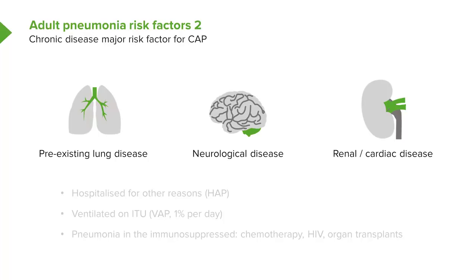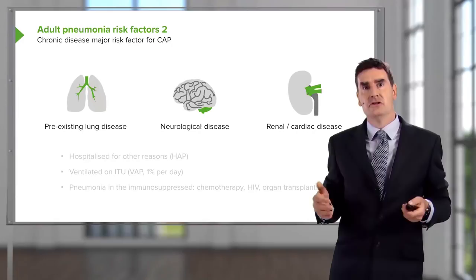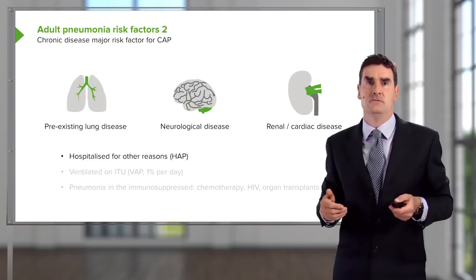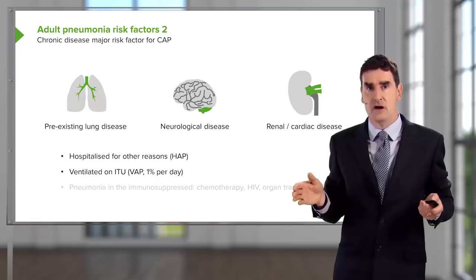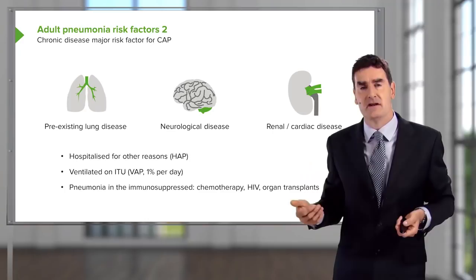For hospital-acquired pneumonia, you need to be hospitalised. For ventilator-acquired pneumonia, you need to be ventilated, with a risk of approximately one percent per day of ventilation. Patients who are immunosuppressed — due to cancer treatment or organ transplantation — are at risk of pneumonia specific to the immunosuppressed host.